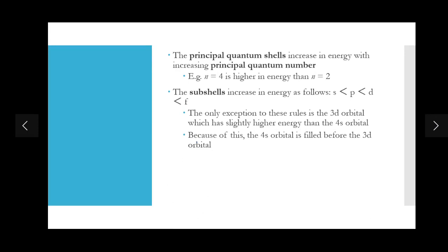The subshells increase in energy as follows: s < p < d < f — easy to remember. The only exception to this rule is the 3d orbital, which has slightly higher energy than the 4s orbital. Because of this, the 4s orbital is filled before the 3d orbital. There is a very small energy difference between them.